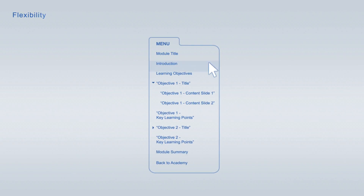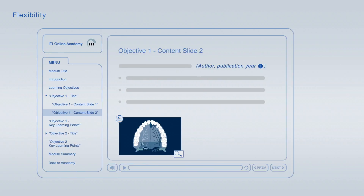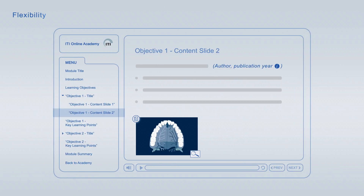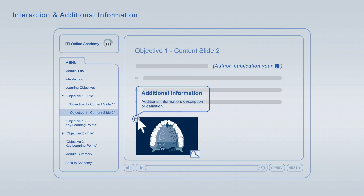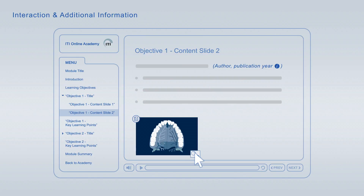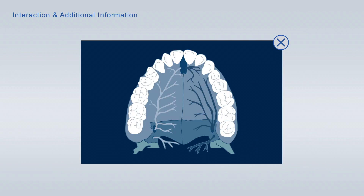You are free to jump from item to item at any time using the module navigation. If you interrupt a viewing session, you can always resume it at a later time at the exact point where you left off. The slides are enriched with interactive elements. You can expand literature references to get detailed information about the publication. In addition, you can look up definitions of specific terms, get further information about images, and enlarge images to scrutinize them in more detail.